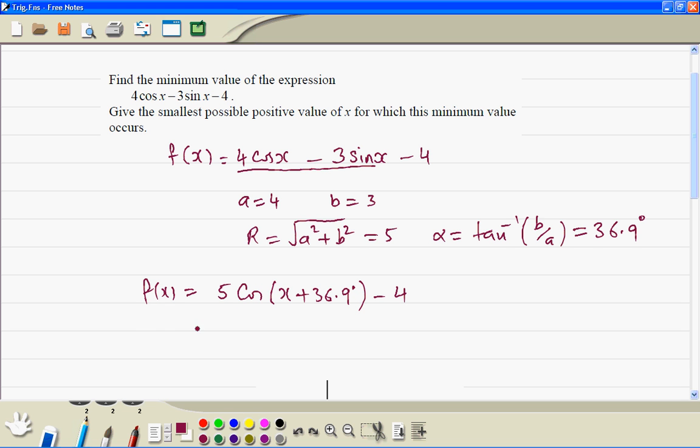Now the minimum value is basically this function, the first part will have minus 5, and minus 4 is minus 9.